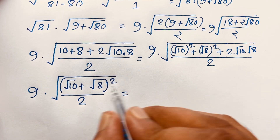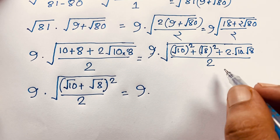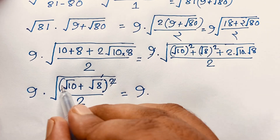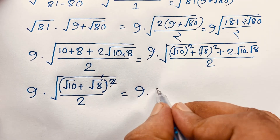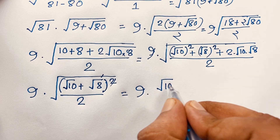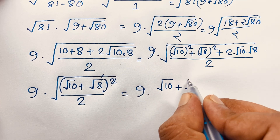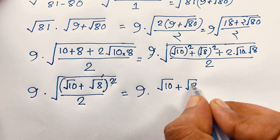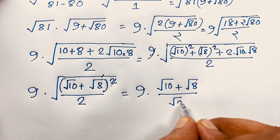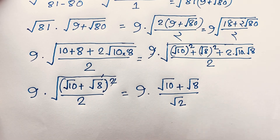Now here, the square root and the square cancel out, so we find it will be 9 times (square root 10 plus square root 8), and this value will be divided by square root 2.